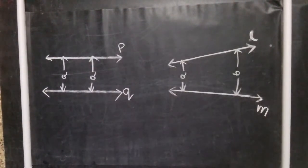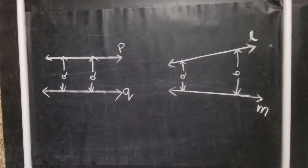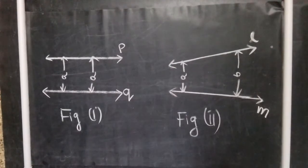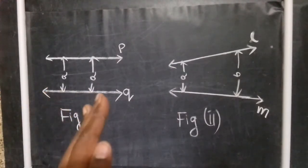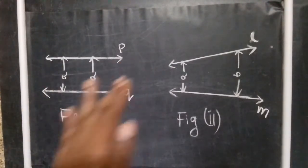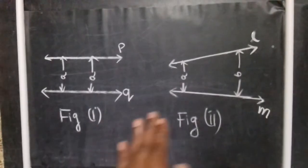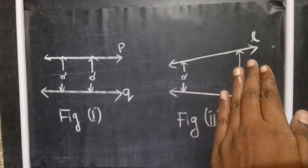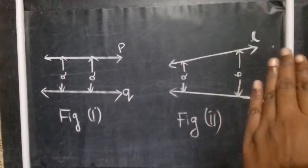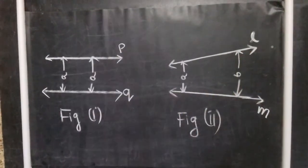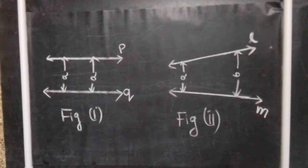Corresponding angles formed by parallel lines and transversal. You can see figure 1 and figure 2. Figure 1 shows line P and line Q. Figure 2 shows line L and line M. In figure 2, it is not parallel lines.